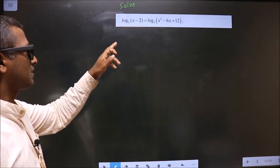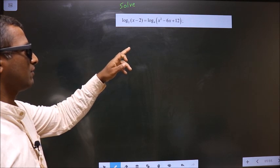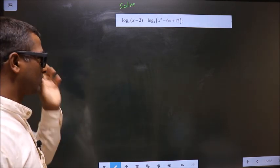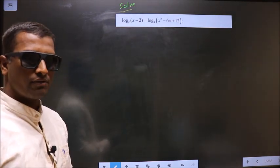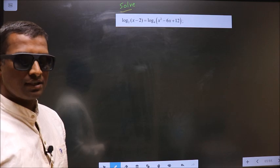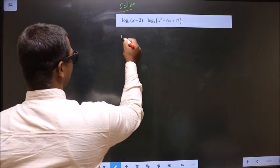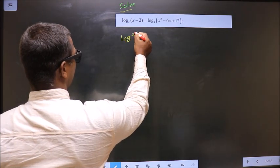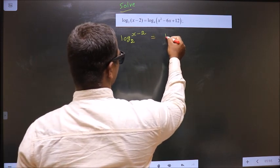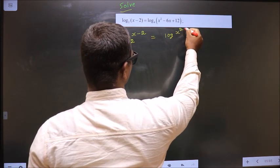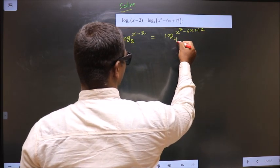Solve log(x minus 2) base 2 equal to log(x squared minus 6x plus 12) base 4. Here we are told to solve, meaning we should find the value of x. The given equation is log(x minus 2) base 2 equal to log(x squared minus 6x plus 12) base 4.